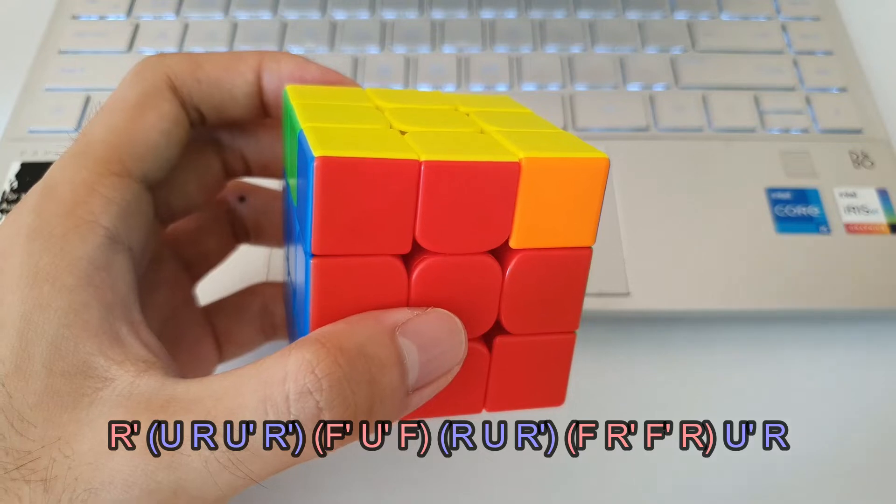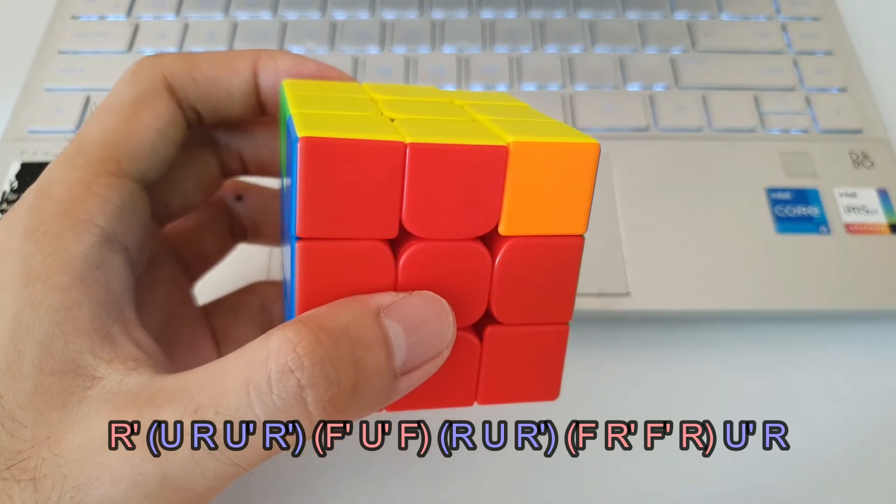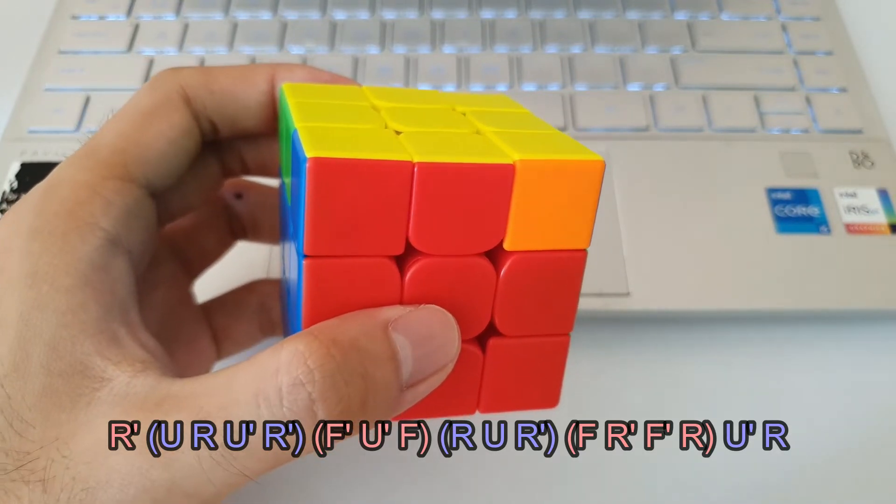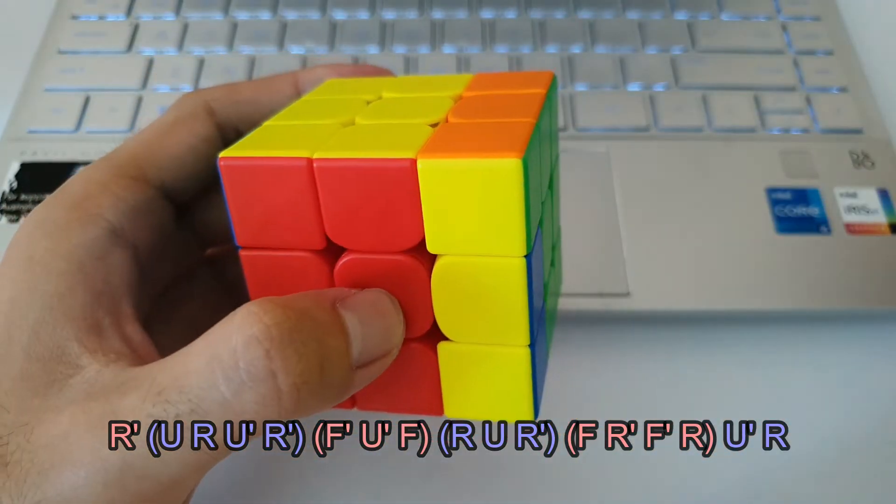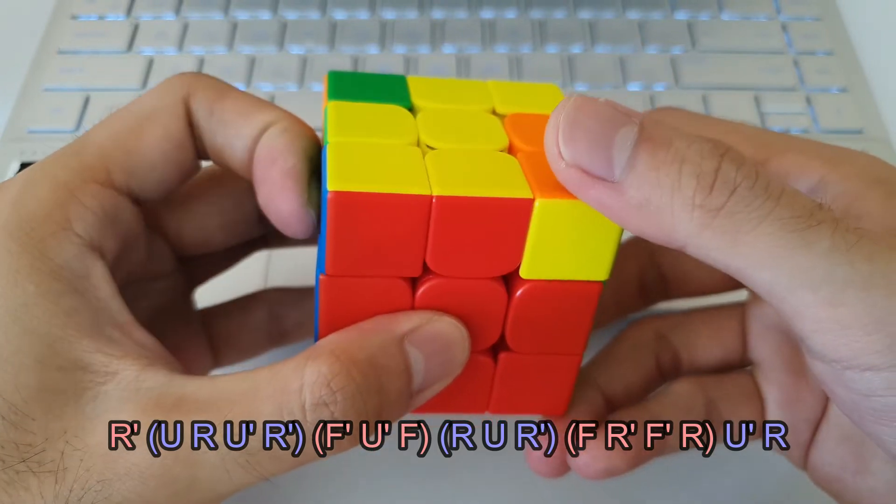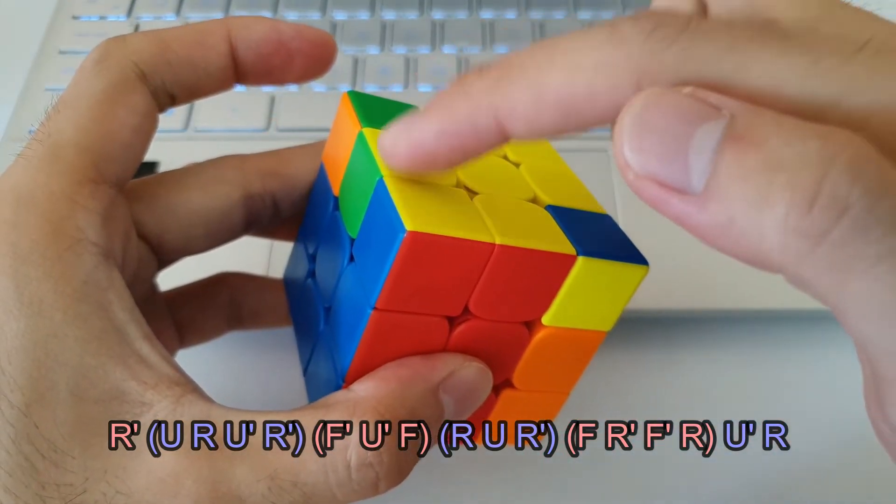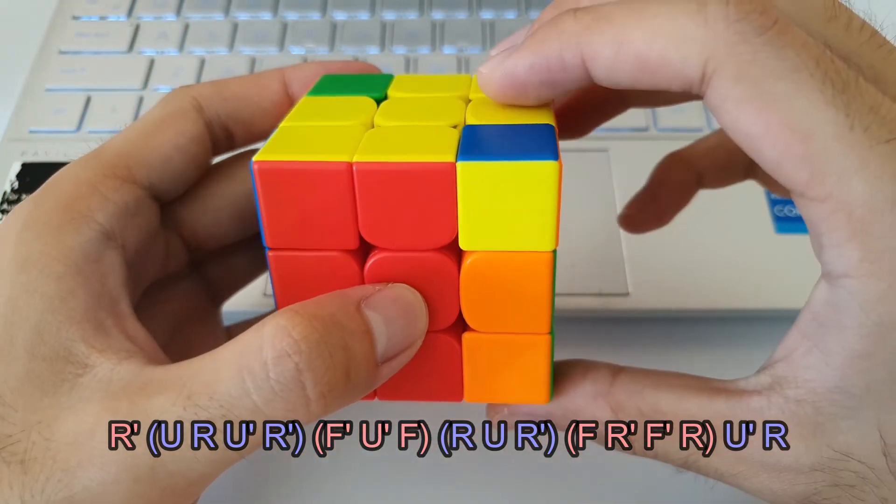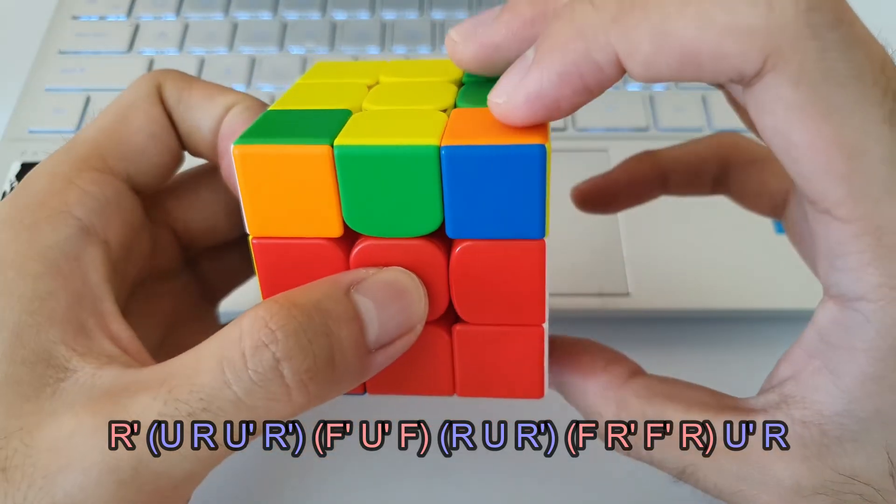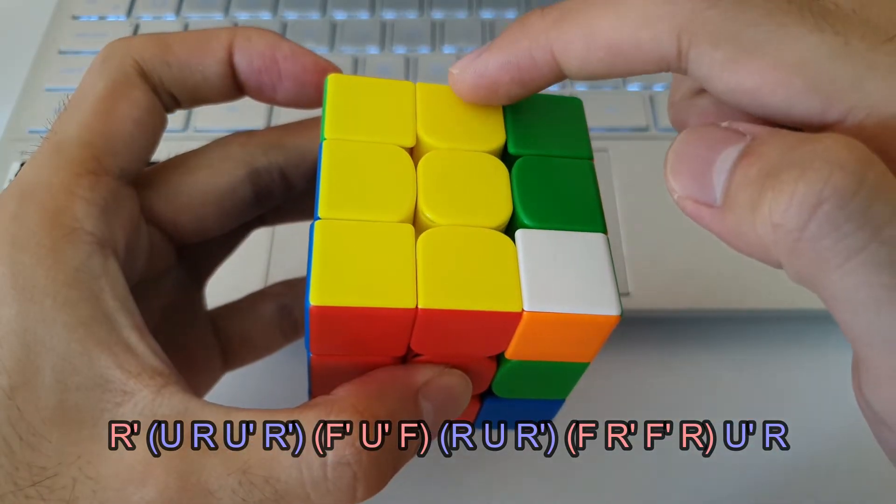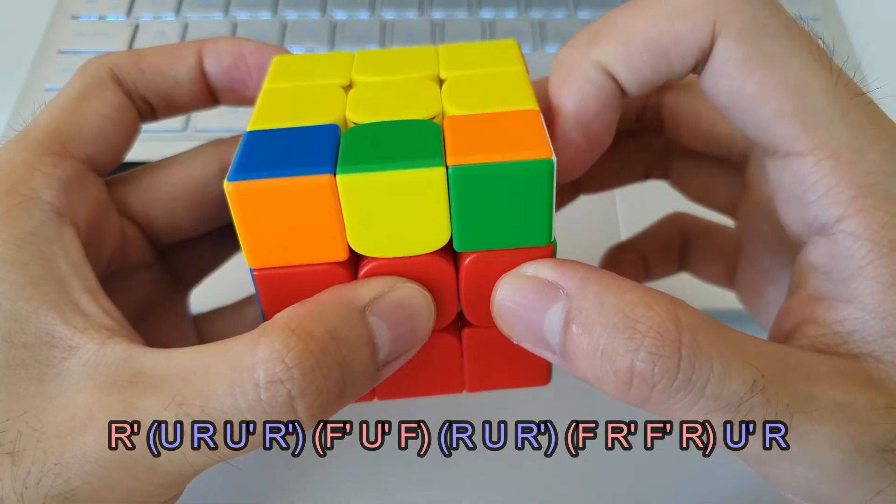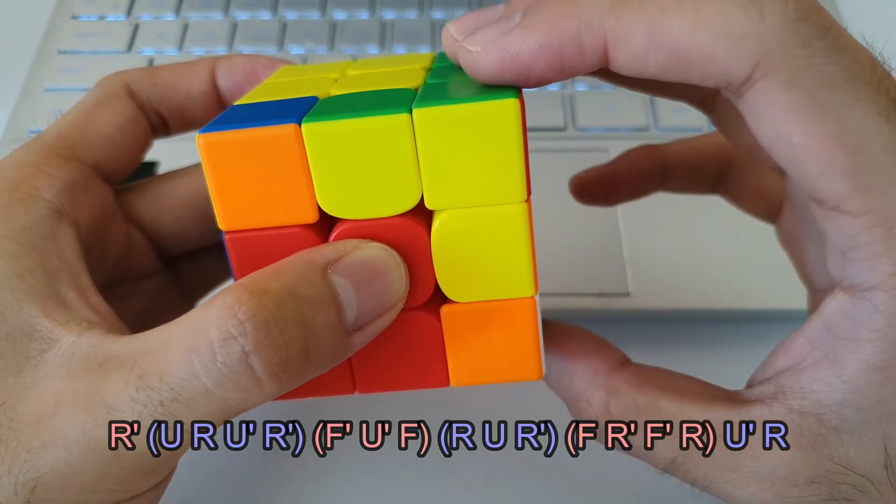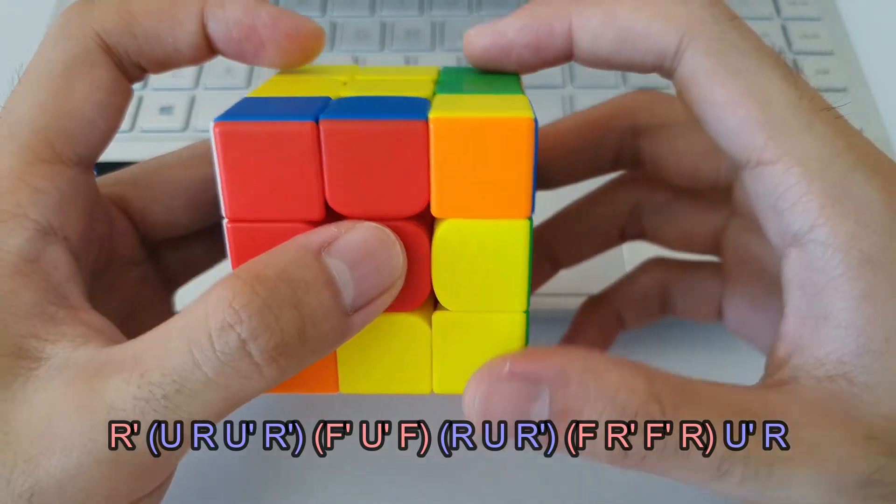So once again, going over that quickly just to make sure you've gotten everything. As always, the Nb algorithm starts with just a single R' followed by an inverse sexy. Next up, insert this edge into the front here using F moves like this, followed by inserting this edge into the front here with R moves like this.